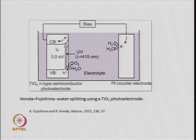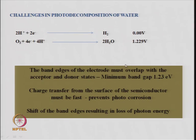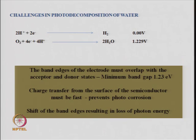TiO₂ has a band gap of around 3 electron volts, which takes care of the 1.23 electron volt minimum for water splitting. This 1.23 eV is obtained by subtracting the cathode potential from the anode potential. When light shines on the photocathode, electrons and holes are generated, and the band gap between them should be at least 1.23 electron volts — this is the first key point for water splitting.